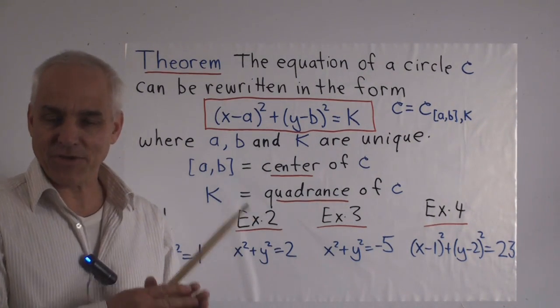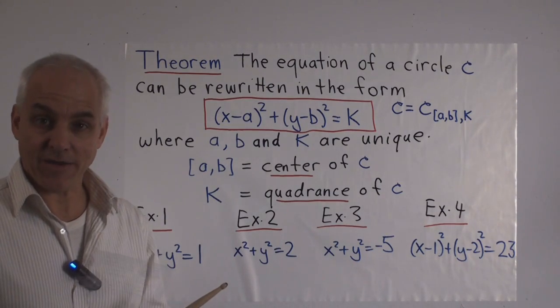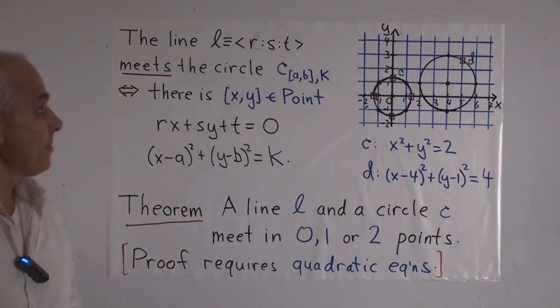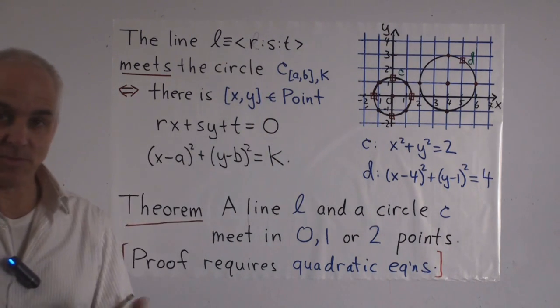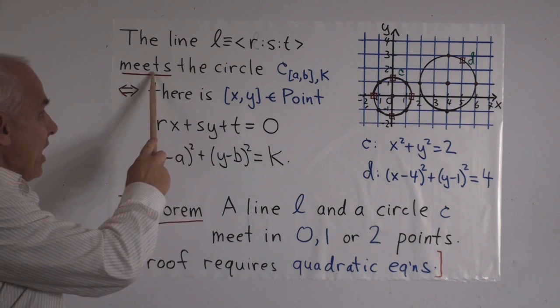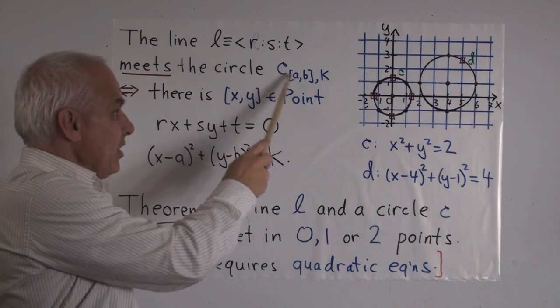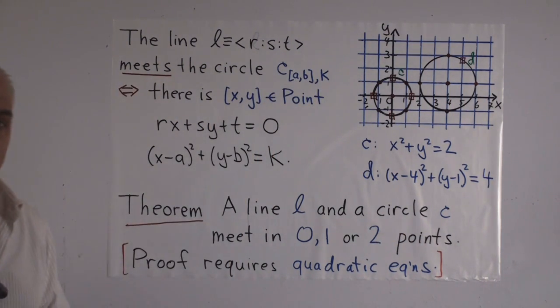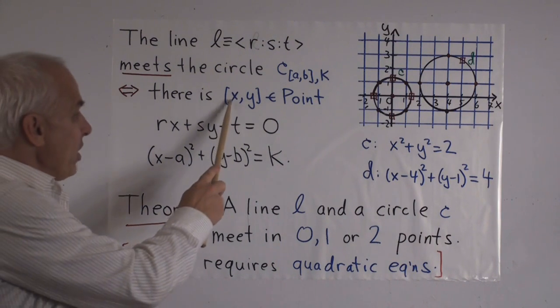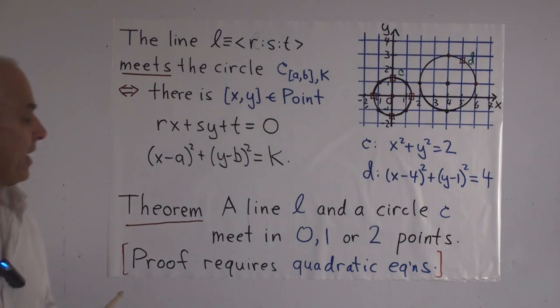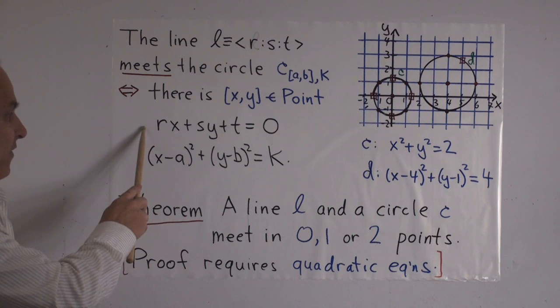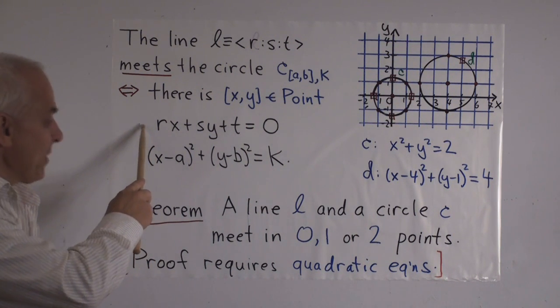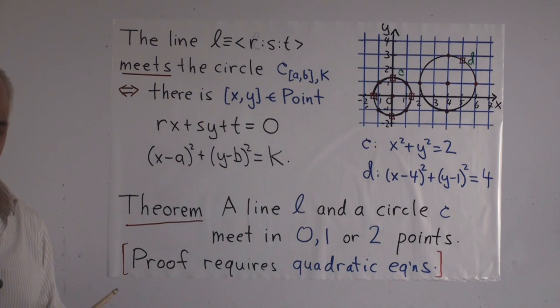Now let's have a look at how the notion of a circle relates to the notion of a line. Suppose we have a line L, given by R:S:T, where R, S and T are some rational numbers. We say that that line meets the circle C, with center (A,B) and quadrance K, precisely when there is a point (x,y) which lies on both the line and the circle. So this pair (x,y) has to satisfy, first of all, the equation of the line and the equation of the circle.